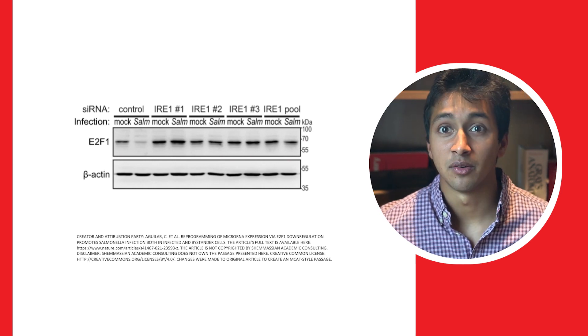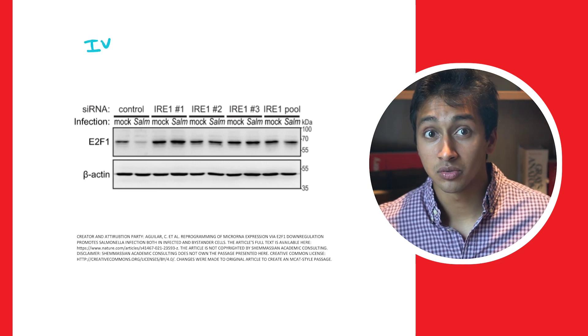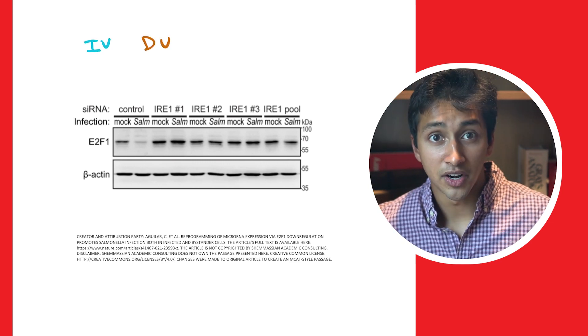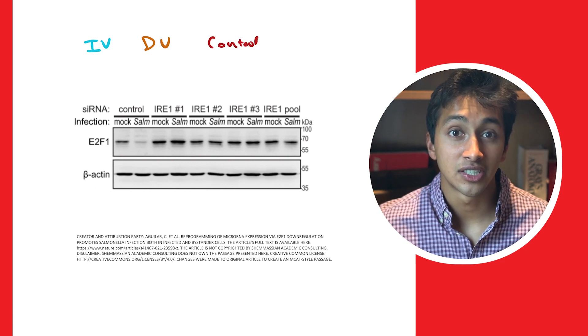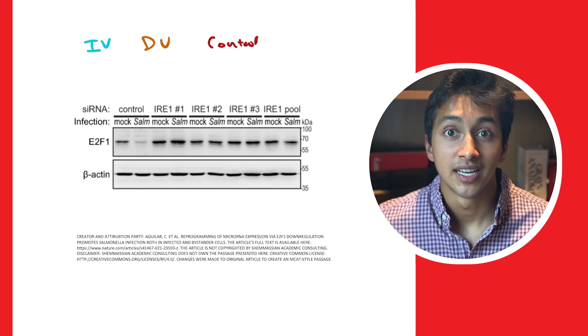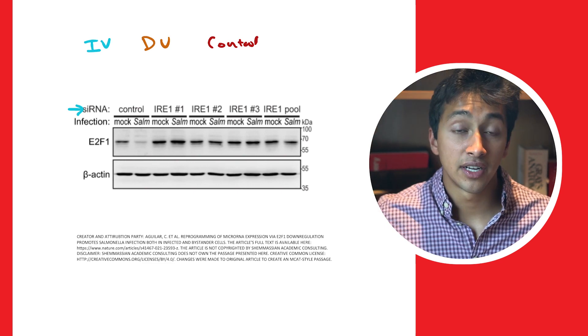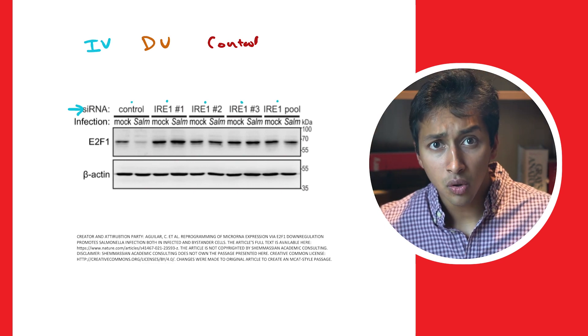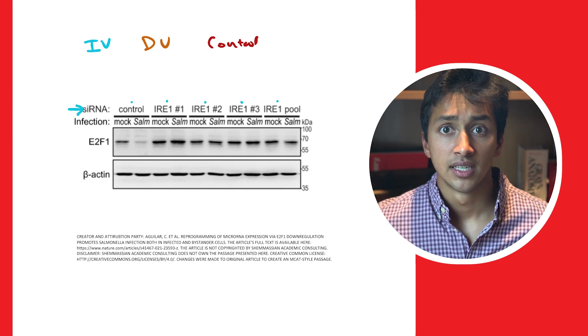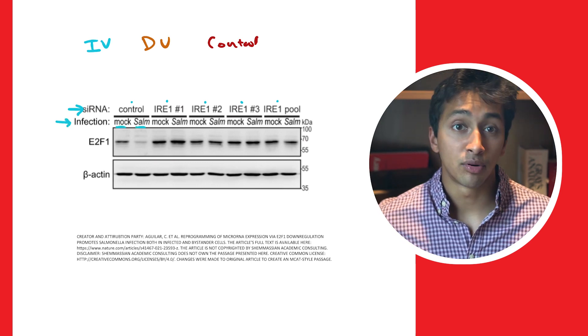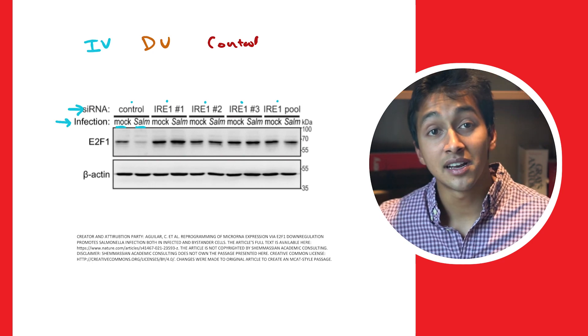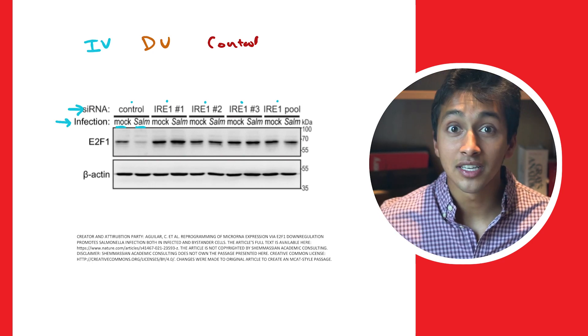First, like every good experiment, Western blots have an independent variable or variables, a dependent variable or variables, and a control. In this Western blot, there are several different independent variables. At the top of this figure are various siRNA molecules, such as a control or different IRE1s. The researchers are also measuring each siRNA condition in the presence of either a mock or a salmonella infection. These are all independent variables.